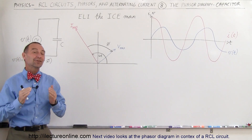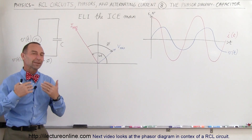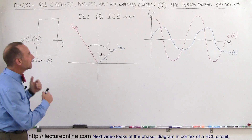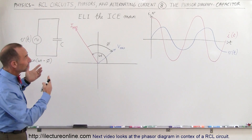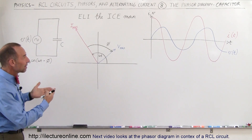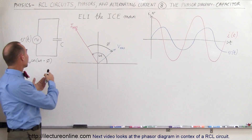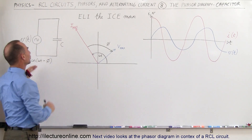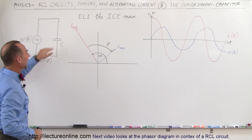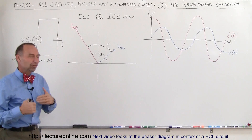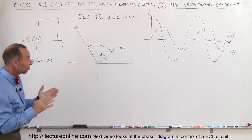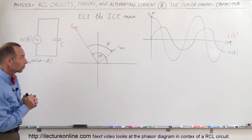Welcome to Ad Lecture Online. In this video, we're going to enable ourselves to understand the phasor diagram for a circuit that has an oscillating voltage supply and a capacitor. This is for a capacitive circuit only — no resistors, no inductors.